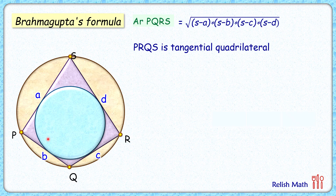Also, with respect to the blue circle, PQRS is a tangential quadrilateral. The property of a tangential quadrilateral is that the sum of opposite sidelines are equal, that is a + c = b + d.